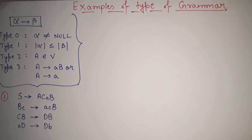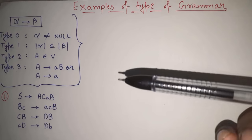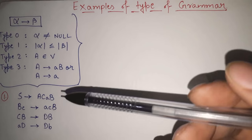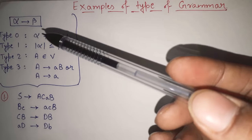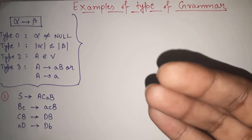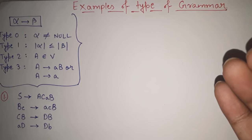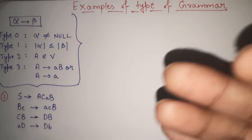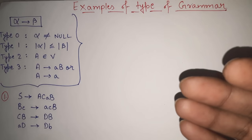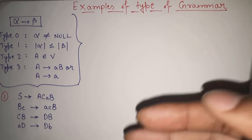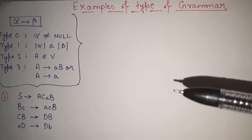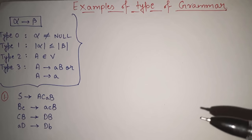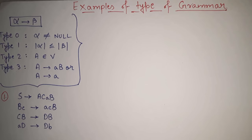In my previous video, I have already discussed about the different types of grammar regarding our theory of computation subject. We have seen type 0, type 1, type 2 and type 3 grammars — what is the difference between these grammars, what is the relation between these grammars, what are the specifications. All those things we have already discussed in our previous video.